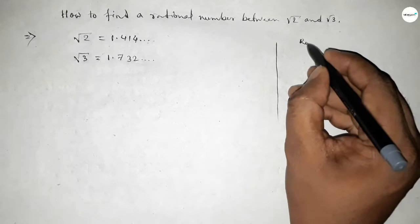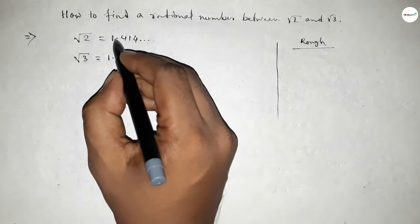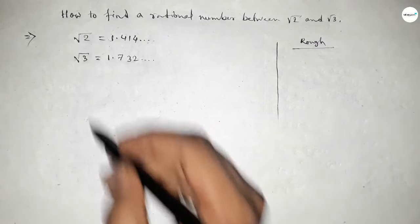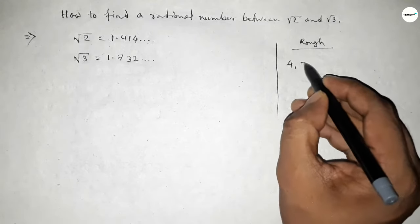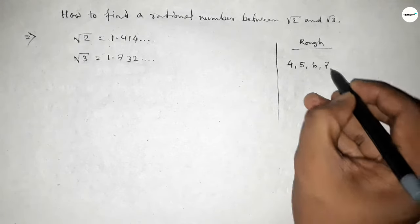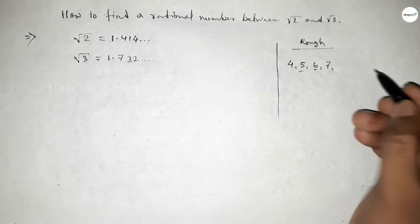Now roughly discussing some calculation here. Both start with 1, so we can find between 4 to 7 in the decimal places. Two digits, 5 and 6, and we can take any one to form a rational number.